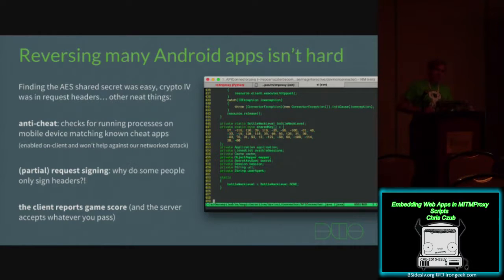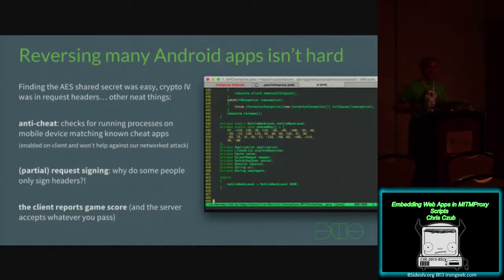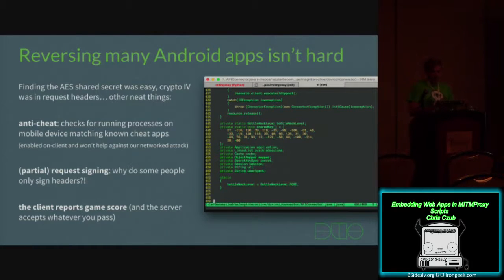I noticed some other interesting things while reversing the game — just bad ideas. The game had rudimentary anti-cheat functionality built in. It turns out the game has over 10 million installs, and people have made cheats you can download on the Google Play Store. So the game checks if any of those cheat processes are running and reports your score as zero. However, this is all client-side and it won't help against a network attack like what I'm going to show.